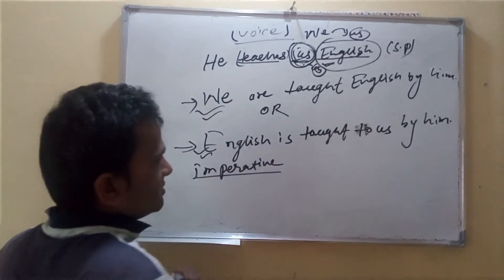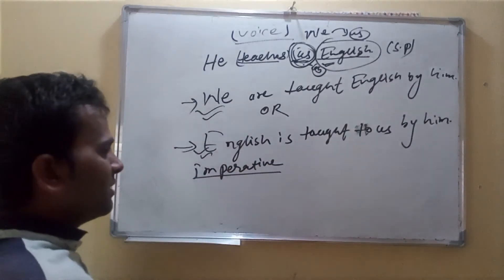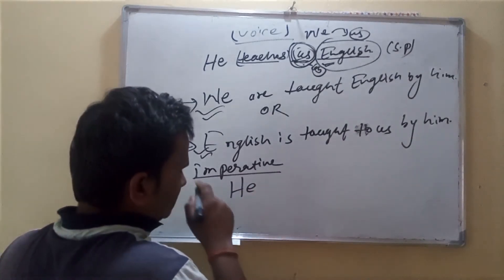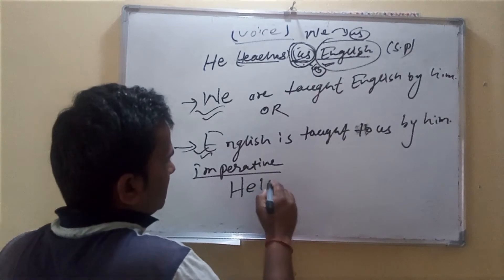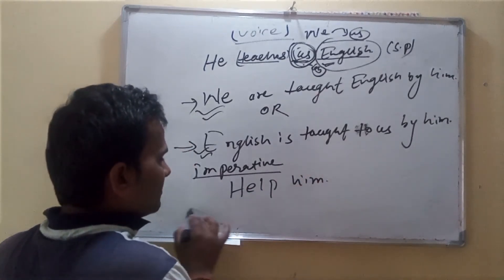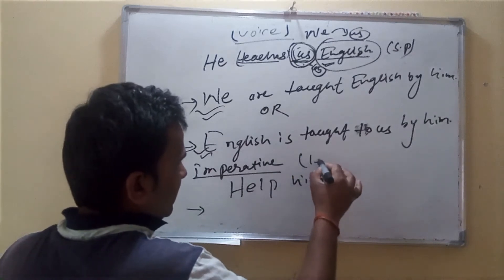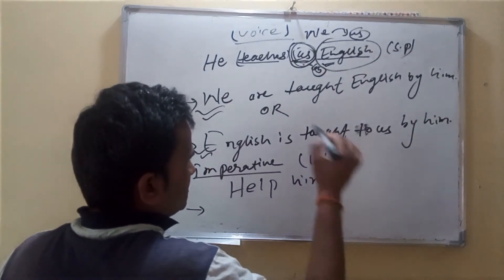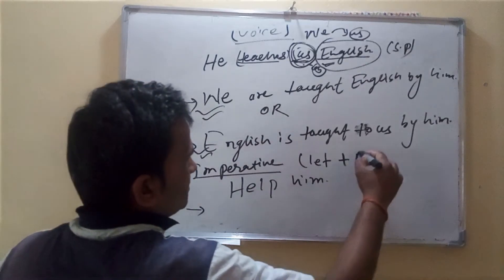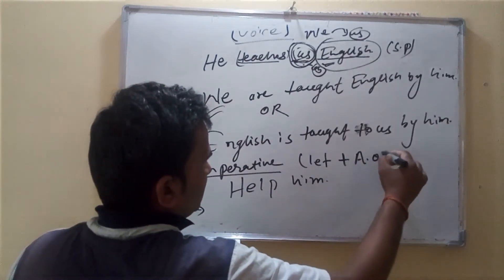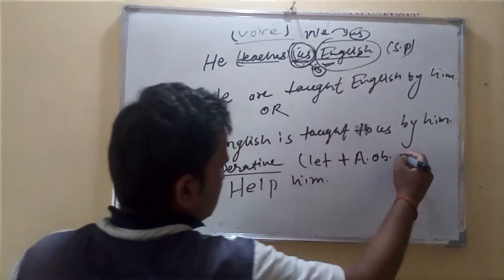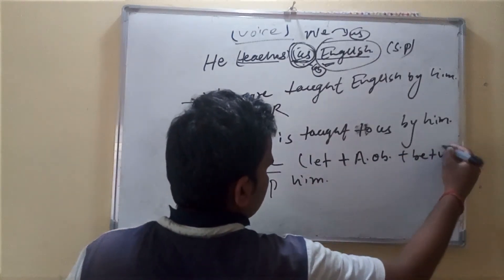Okay, you can say — it's what's on else: line plus, let plus active voice object plus B plus B3.